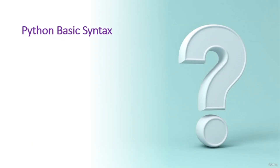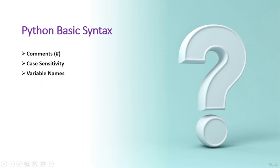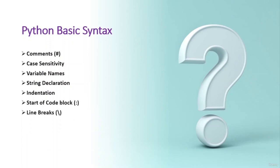There are some basic syntax rules in Python. Adhering to these rules will help you write clean, readable, and maintainable code. These include how to add comments, why capitalization matters and how to use it correctly, guidelines for naming variables, how to create strings, the importance of indentation or whitespace, how to indicate the start of a code block, how to break long lines for better readability, and how to indicate the end of a statement.